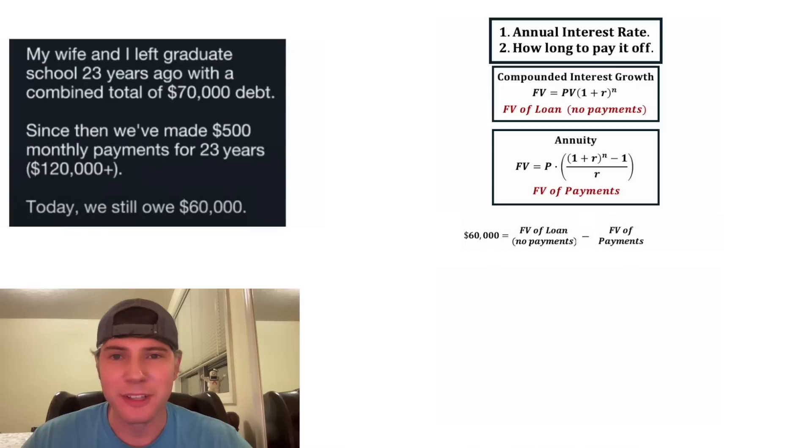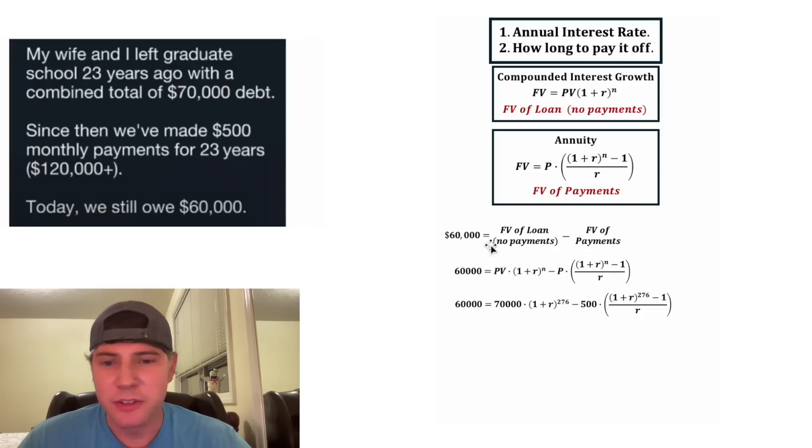And these are literally these formulas. So we'll bring down the $60,000. For the future value of loan, no payments, we'll use this formula. And then we're going to subtract the future value of payments, which is this formula. And then next, we can plug in all our values. So the present value is equal to $70,000. We're treating that like the initial value. We currently don't know the r, so we're going to leave it as r. N is the number of months, so it's going to be 23 years times 12. And that ends up being 276. P is equal to the payment size. That's $500. And then we're going to copy down everything else. And in the place of the N, we'll plug in another 276. Since this is so complicated, let's set everything equal to zero. Let's subtract $60,000 from both sides. And we end up with zero is equal to all of this stuff.